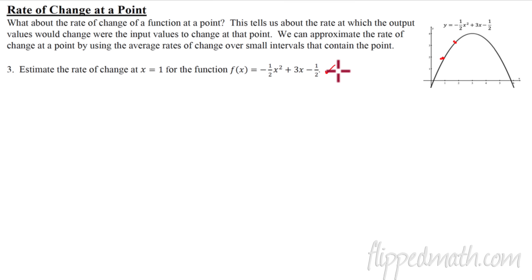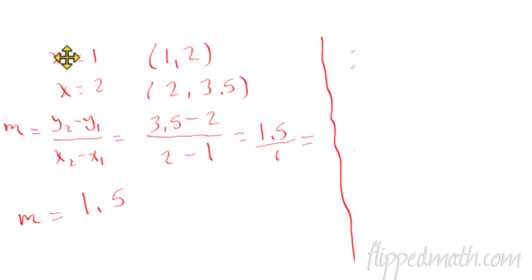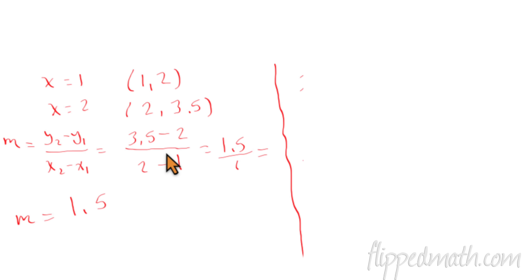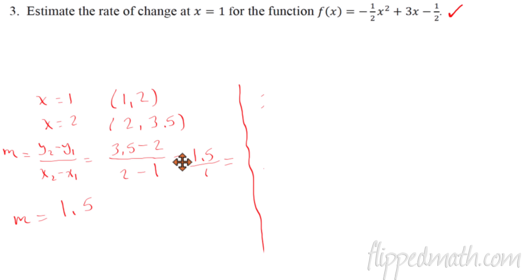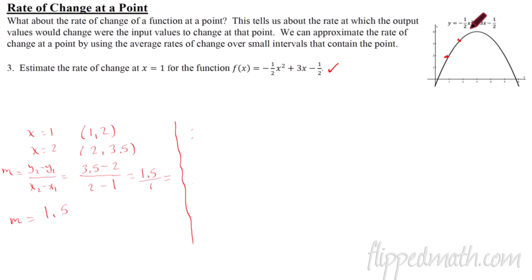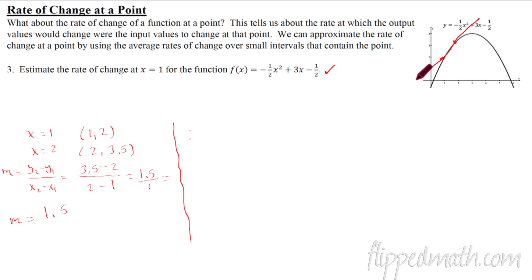To estimate the rate of change at x equals 1, I'll pick two nearby points: x equals 1 and x equals 2. Plugging into our function gives (1, 2) and (2, 3.5). Using the slope formula, the average rate of change works out to 1.5. That represents the slope of the straight line connecting those two points — a decent estimate, but we can do better.